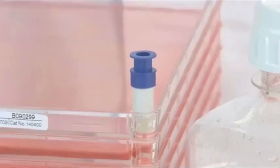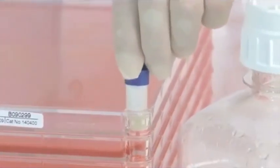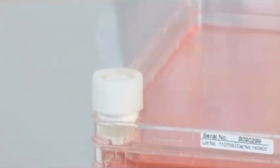To empty the EasyFill Cell Factory System through the smaller port, remove the blue cover cap and loosen the white vent cap approximately three quarters of a turn. Then, simply pour the medium into the bottle.